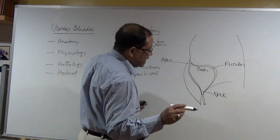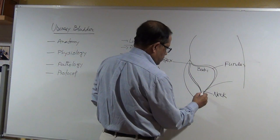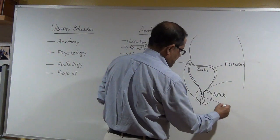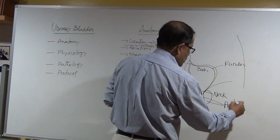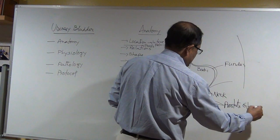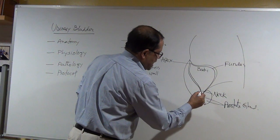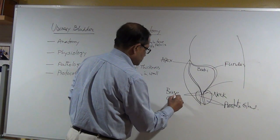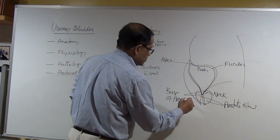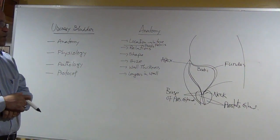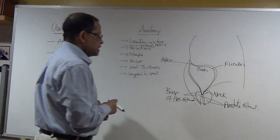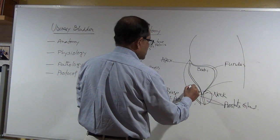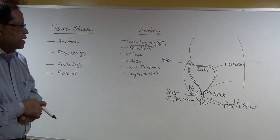For the male, the prostate gland is at the neck of the bladder. The neck of the bladder connects to the base of the prostate gland, and the symphysis pubis is right in front.